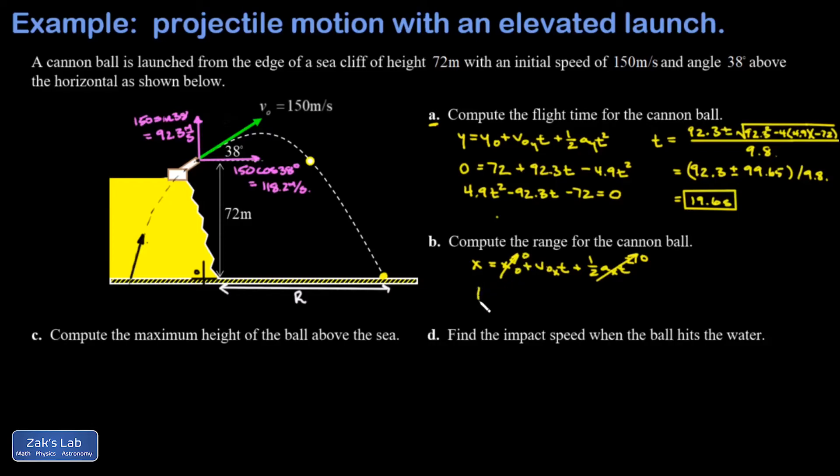My final x position I'll call capital R. It's going to be my x velocity times the flight time. When I crunch the numbers, I get 2320 meters, keeping three significant figures.